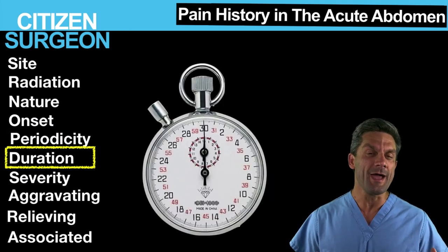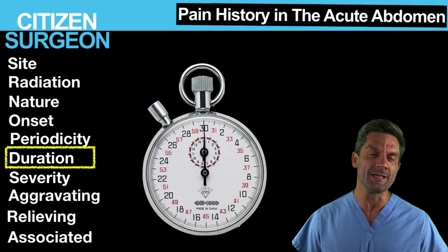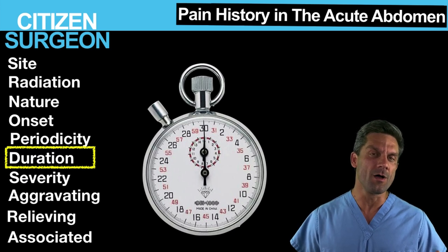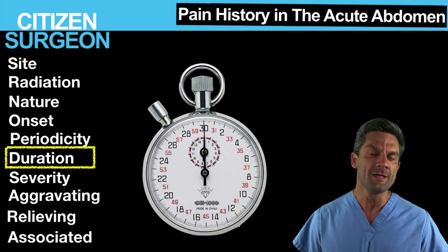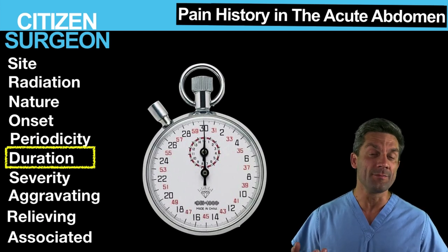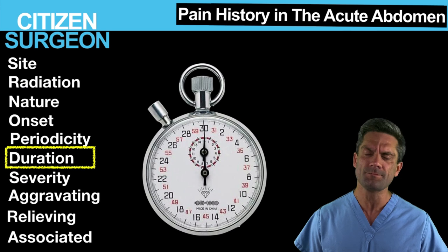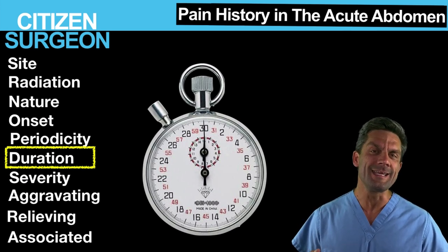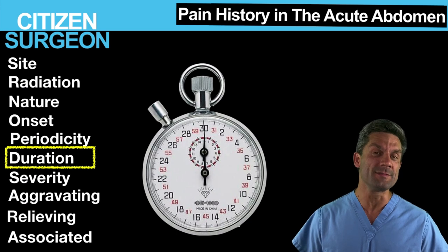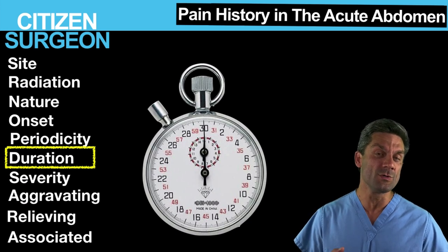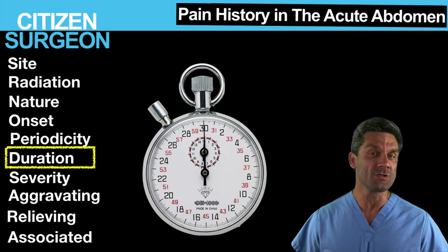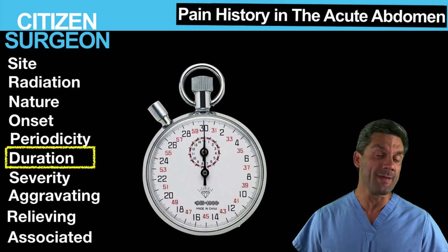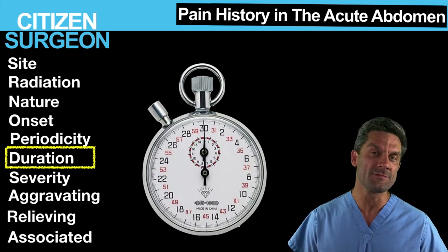Duration — when you do have some periodicity and it's not constant, how long is the pain lasting for each interval, and what's your break? Do you get a break of five minutes, fifteen minutes? Does the pain only come on for thirty seconds? Sometimes it's easier to tease out the difference between peptic ulcers, duodenal versus gastric, depending on when the pain comes on and how long it lasts.